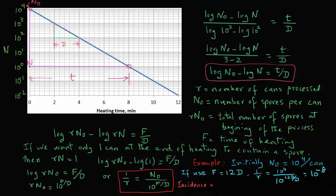That means the incidence of survival is going to be 1 can in 10 raised to power 8 cans processed. So what that means is that for this 12d process that we are using, when the initial spore population was 10 raised to power 4 per can, the incidence of survival is 1 can in 10 raised to power 8 cans processed. This is how we can use spoilage probability to determine the incidence of survival after certain thermal process.